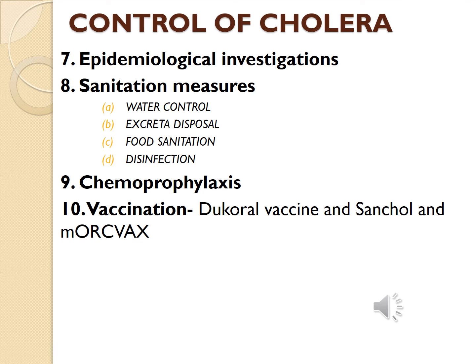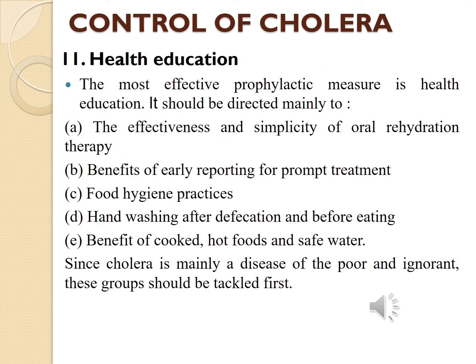The Shanchol vaccine is licensed for children greater than one year of age, and two doses should be given 14 days apart. Perhaps the most effective prophylactic measure is health education. It should be directed mainly toward the effectiveness and simplicity of oral rehydration therapy, the benefits of early reporting for treatment, food hygiene practices, handwashing after defecation and before eating, and the benefits of cooked hot foods and safe water. Since cholera is mainly a disease of the poor and the ignorant, these groups should be tackled first.